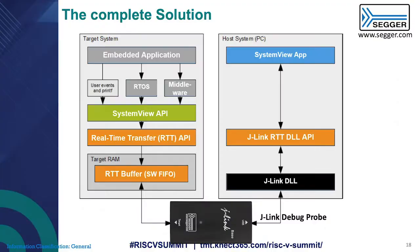The complete solution with all the pieces in place: SystemView serves as the API on the target, Real-Time Transfer handles the buffer, you have the J-Link as the debug probe, the J-Link DLL, the RTT DLL, and then the SystemView application for visualization and analysis.